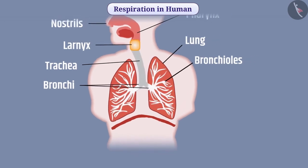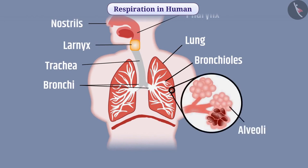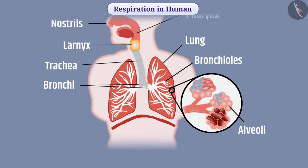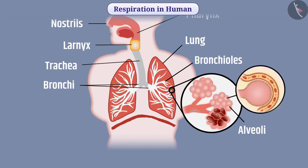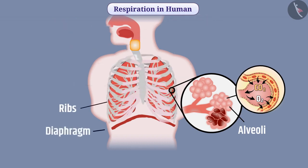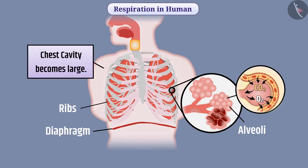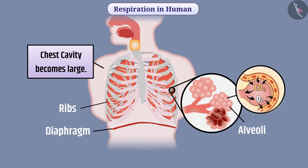In the lungs, bronchioles terminate into alveoli, which are like a bunch of grapes. In the wall of alveoli there is a network of blood vessels. The surface of alveoli is thin, which allows oxygen to be taken from the alveoli into the blood and carbon dioxide in the blood to be released into the alveoli. Lungs are present inside the ribs. While inhaling, the diaphragm becomes flattened, the ribs lift up, and the chest cavity becomes large, so air flows into the lungs and alveoli fill with air.